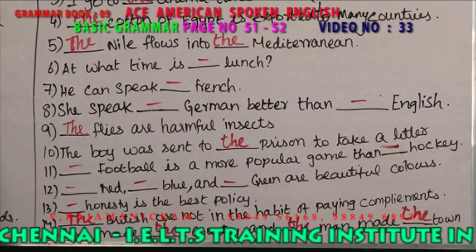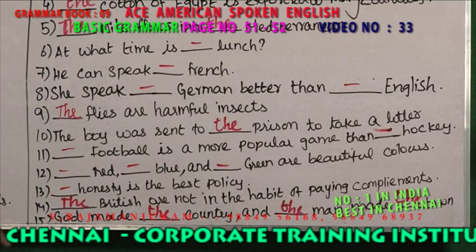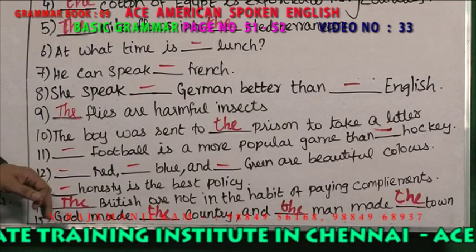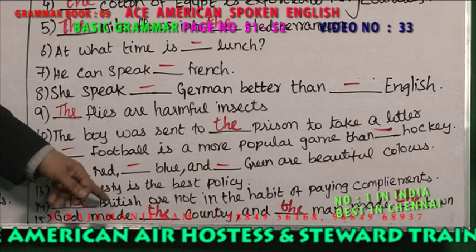Red, blue and green are beautiful colors. You do not say 'the red, the blue, the green' — you are not supposed to use articles in front of colors. Honesty is an abstract noun — you are not supposed to use an article. Honesty is the best policy. The British are not in the habit of paying compliments — 'the British' refers not to the country but to the British people.